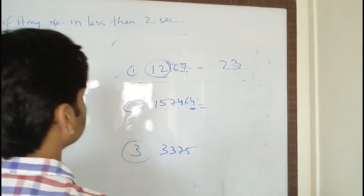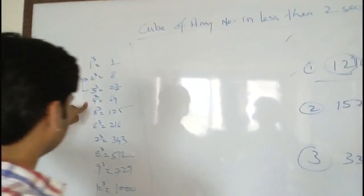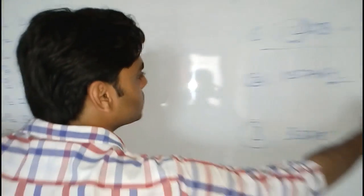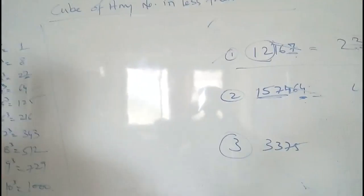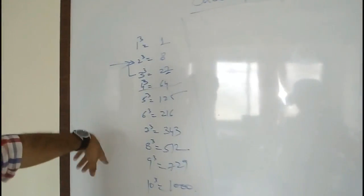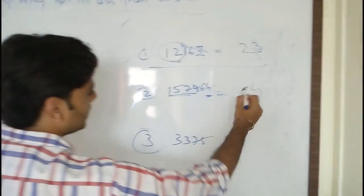So here as we can see that the unit place is 4. So the unit place is 4. Ignore the last 3 and we are left with 157. So 157 is between 5 and 6. Always take the less one, so it is 5.